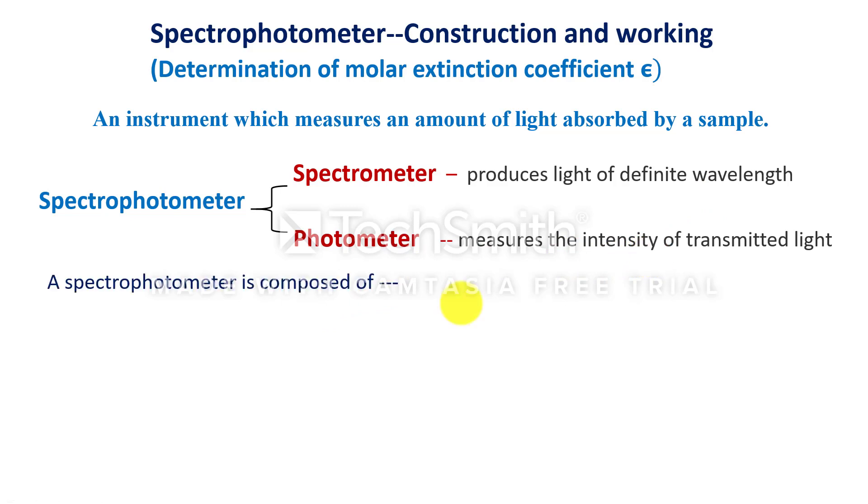A spectrophotometer is mainly composed of source. Source may be tungsten filament lamp or hydrogen or deuterium lamp. For visible light, tungsten lamp can be used. For ultraviolet light, hydrogen or deuterium lamp can be used.